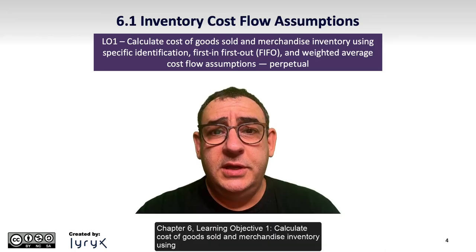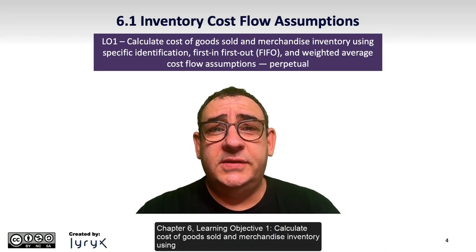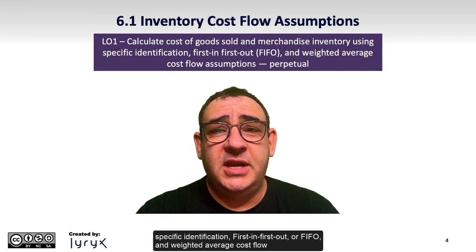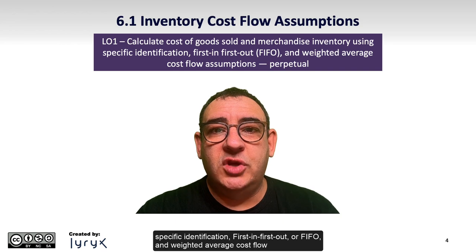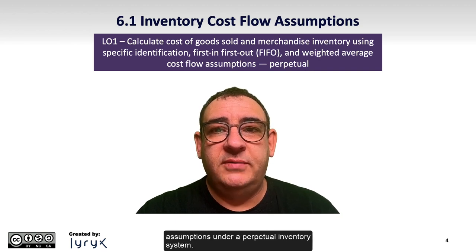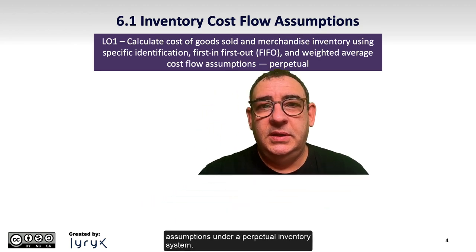Chapter 6 Learning Objective 1: Calculate cost of goods sold and merchandise inventory using specific identification, first-in first-out or FIFO, and weighted average cost flow assumptions under a perpetual inventory system.